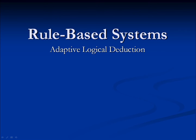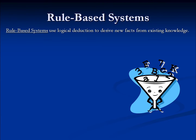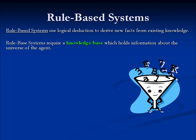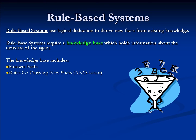One way to build such constructs is what we call a rule-based system, which uses logical deduction to derive new knowledge from existing data. In a rule-based system, we store all information that an agent has about its universe in a construct known as a knowledge base. The knowledge base has two particular types of data. Known facts are direct unconditional statements. Rules, which are used for deriving new information, are conditional — if one thing is true, then another thing is true.